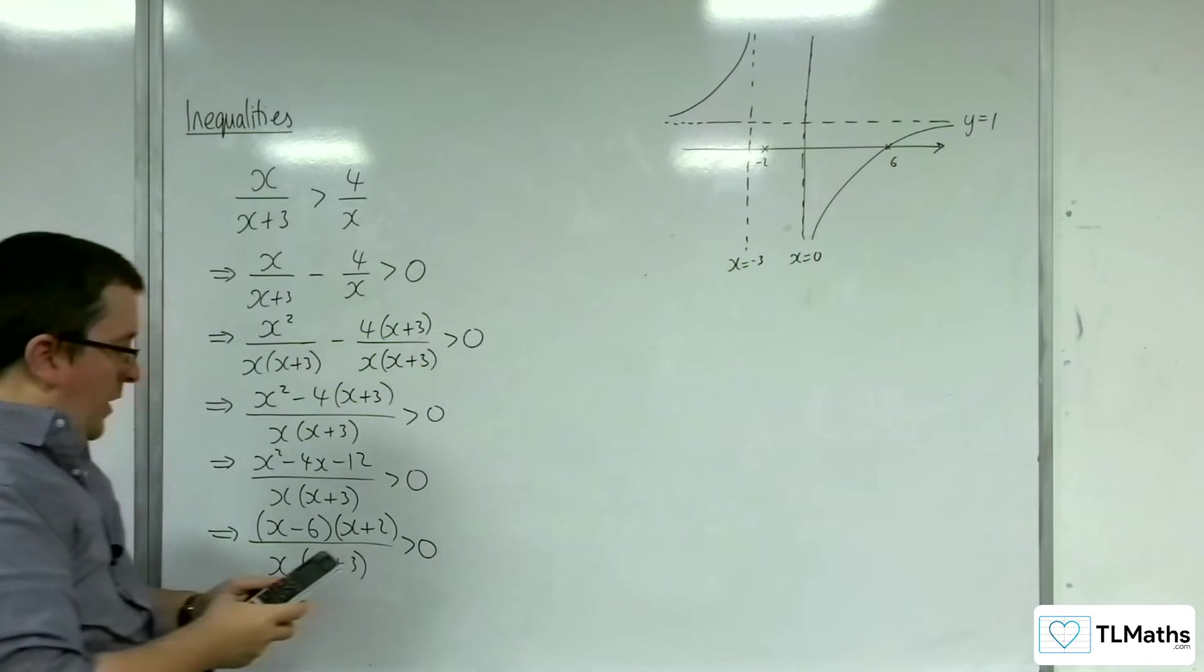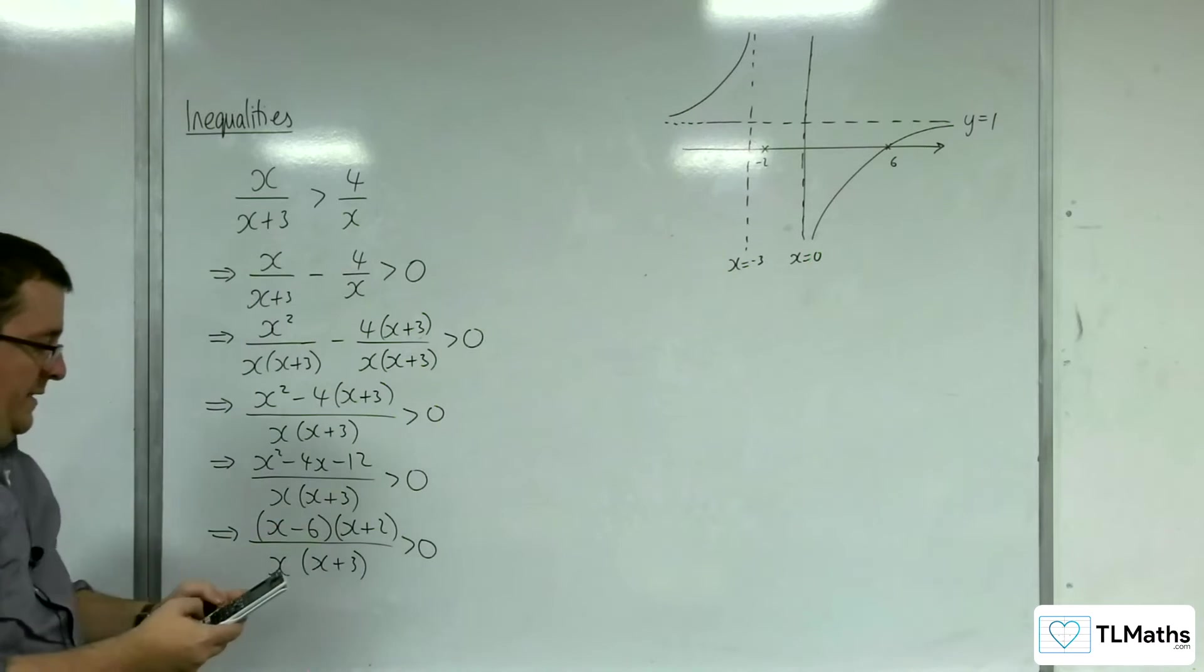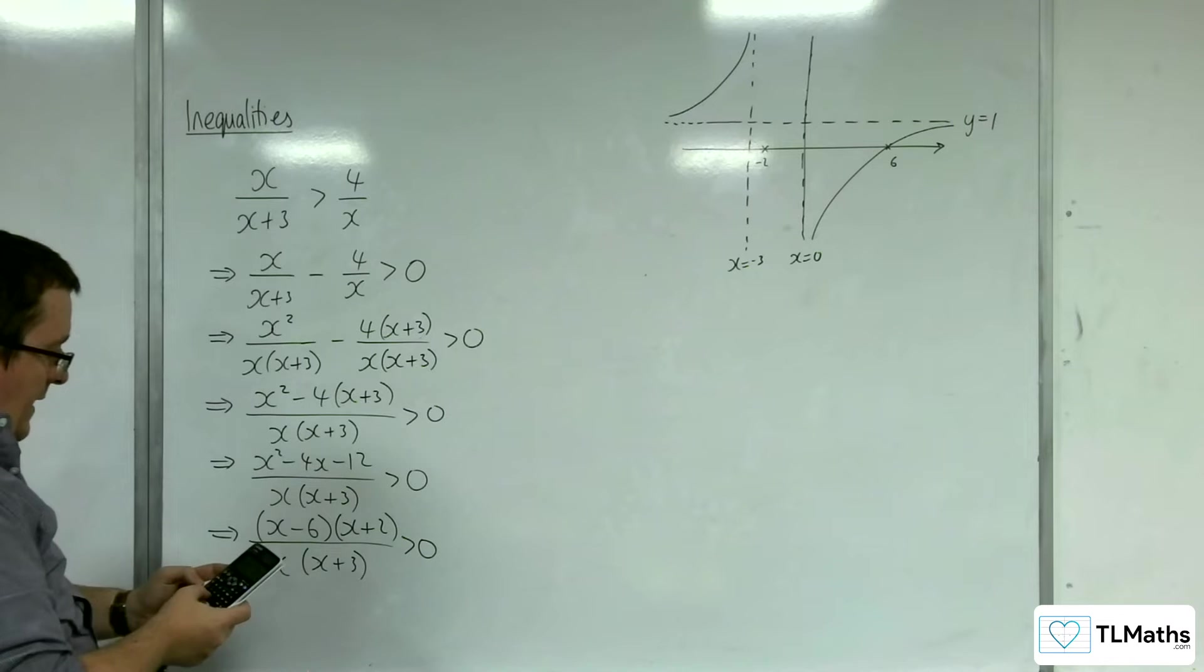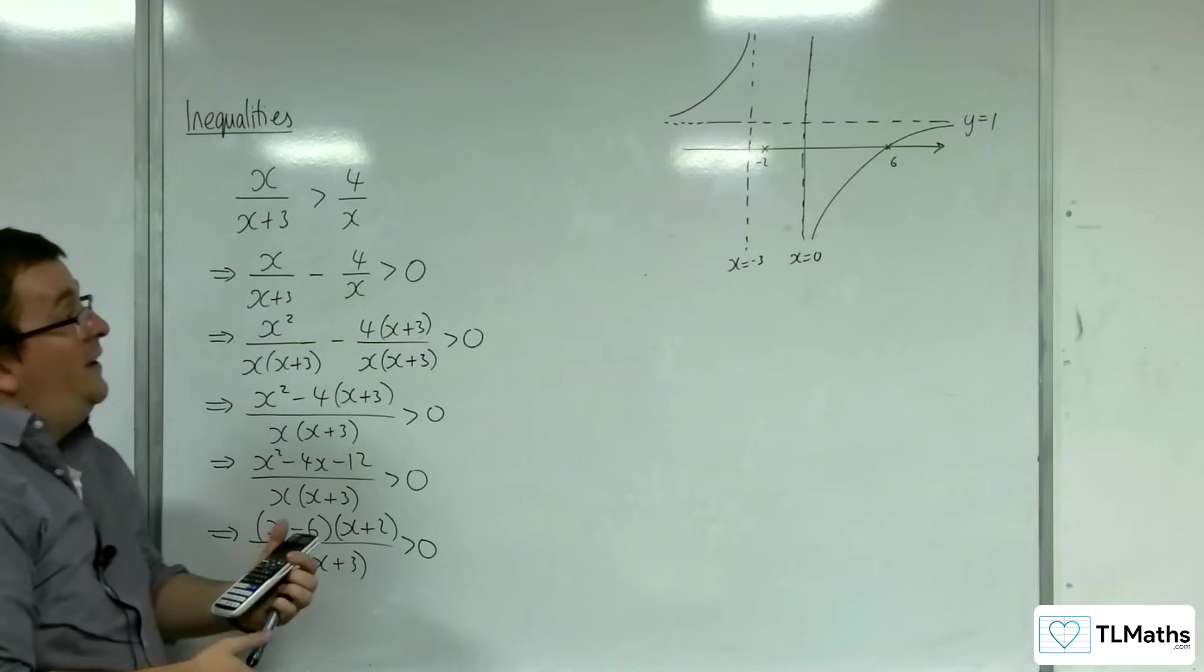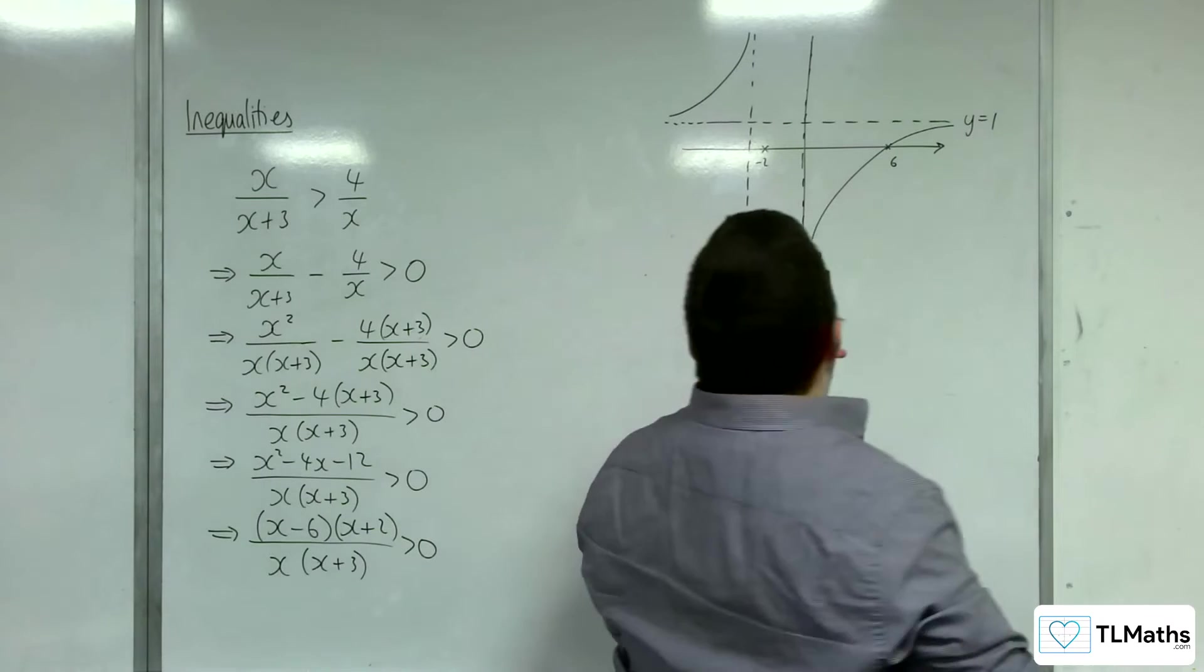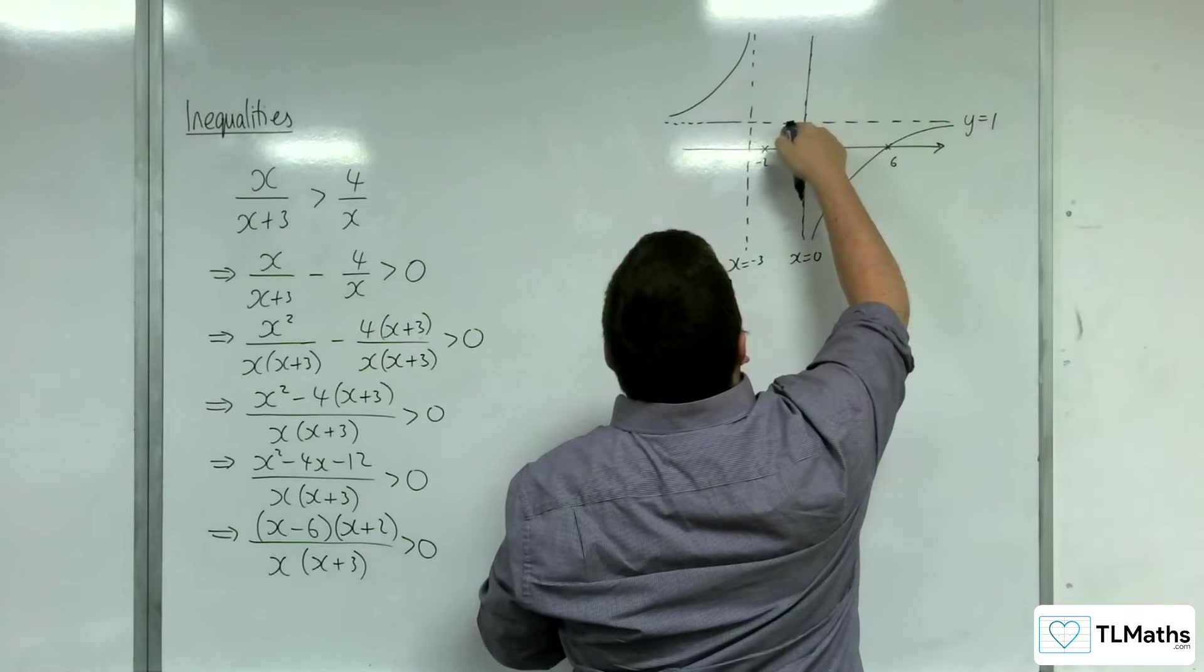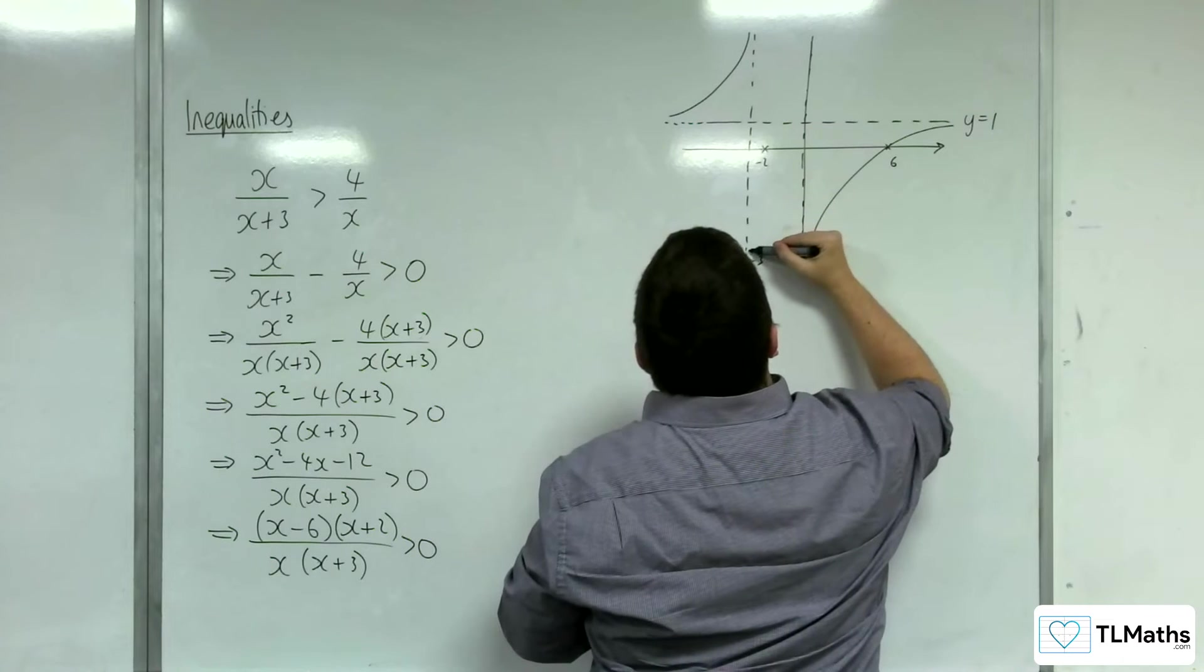So I'm going to substitute minus 1 into this. So we're going to get minus 1 take away 6 times by minus 1 plus 2 over minus 1 times by minus 1 plus 3. And we get 7 halves, so something positive. So actually, because it's positive,